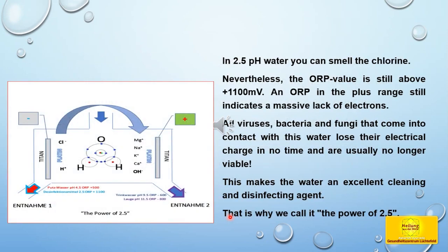In 2.5 pH water, you can smell the chlorine. Nevertheless, the ORP value is still above 1100 mV. An ORP in the plus range still indicates a massive lack of electrons. All viruses, bacteria and fungi that come into contact with this water lose their electrical charge in no time and are usually no longer viable. This makes the water an excellent cleaning and disinfectant agent. That is why we call it the power of 2.5.